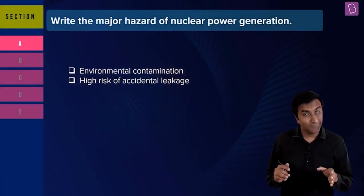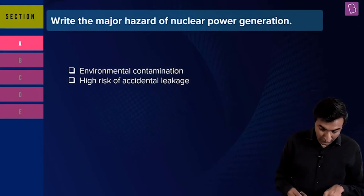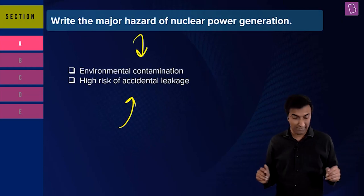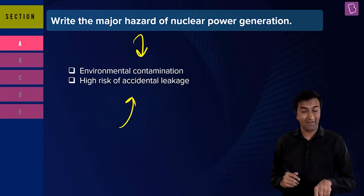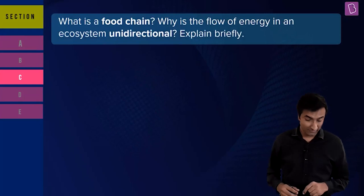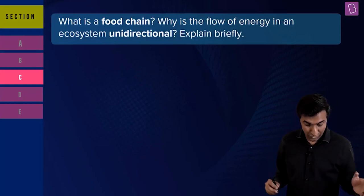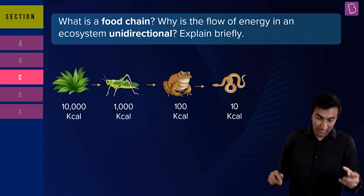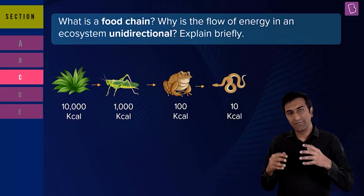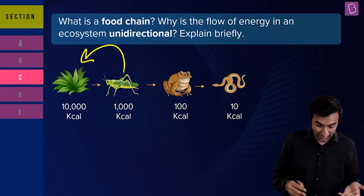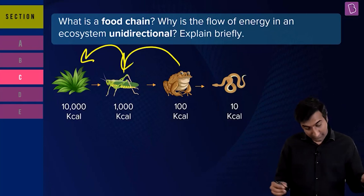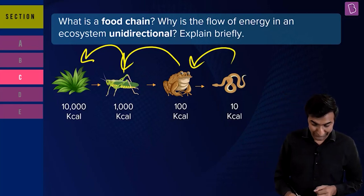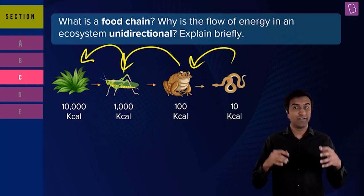A question from Section A of this unit: 'Write the major hazard of nuclear power generation.' The answer: environmental contamination and high risk of accidental leakage — quite direct. Another question from Section C: 'Why is the flow of energy in an ecosystem unidirectional?' The chain is in one direction — only 10% of energy is transferred from one level to the next. This dude eats 10,000 calories of plants but can only assimilate 1,000, then 100, then 10. That's why energy flows in one direction.